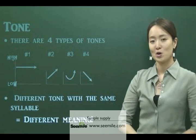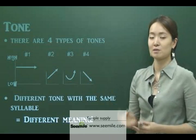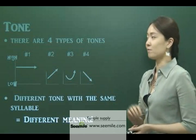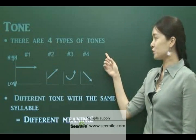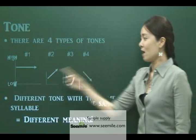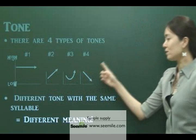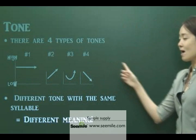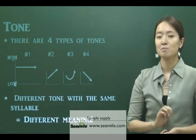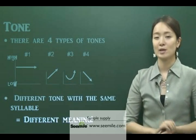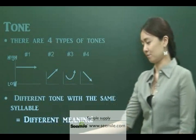Let's move on to tone. I will briefly explain the definition of tone, because we are going to cover it in detail at the very last part of our class. First of all, there are four types of tones in Chinese: first tone 'ā', second tone 'á', third tone 'ǎ', fourth tone 'à.' Tone is one of the most tricky parts in learning Chinese, because the same syllable with a different tone can have a completely different meaning.